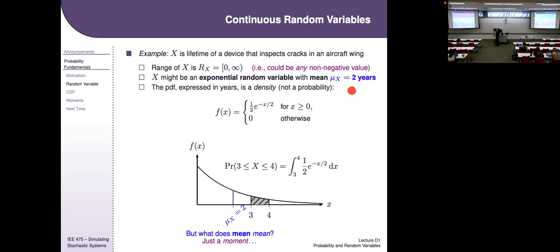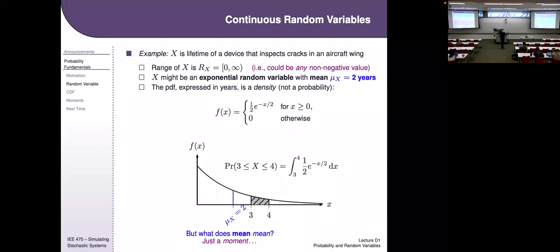We haven't talked about what 'mean' means yet, but if you look at the exponential PDF, the mean is where this block would balance. That's exactly what mean is — the center of mass of a distribution.